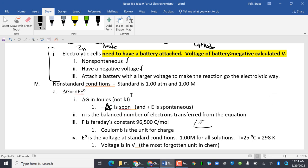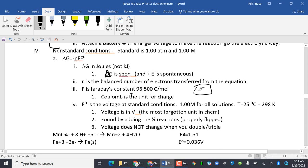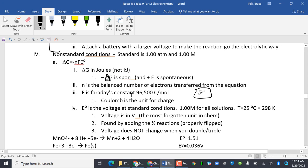N is the balanced number of electrons transferred from the equation. F is Faraday's constant, 96,500 coulombs per mole. Coulomb is the unit for charge. E naught is the voltage at standard conditions, one molar for all solutions. Temperature is 25 degrees Celsius, which is 298 K.